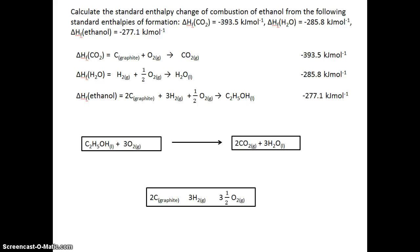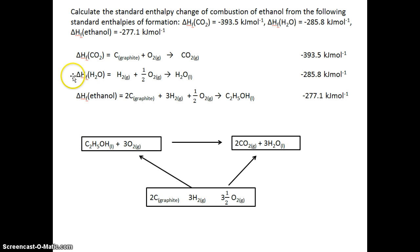The next step is to put the arrows in the direction of the data you were given. The enthalpy change of formation of carbon dioxide begins with carbon and oxygen and goes to carbon dioxide gas, so this arrow goes this way, not backwards. The enthalpy change of formation of water goes from the elements in their standard states to the water, so the arrow goes in this direction. And the enthalpy change of formation of ethanol goes from the elements in their standard states to the ethanol, so the arrow goes from reactants to products for the data you were given.